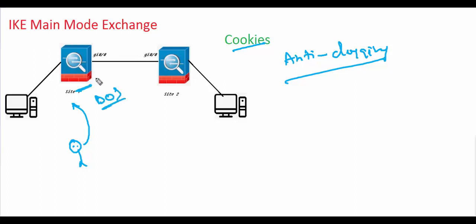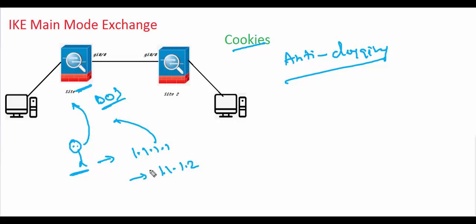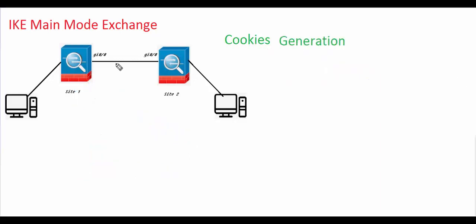To make the situation worse, an attacker can initiate these negotiations using randomly chosen IP addresses — at one moment sending from 1.1.1.1, then switching to 1.1.1.2 using some program — causing a DoS or anti-clogging resource attack against the ASA.